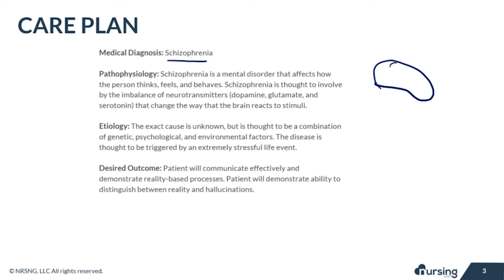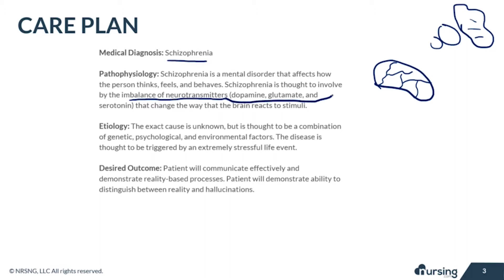Schizophrenia affects how the patient thinks, how they feel, and how they behave. It is thought to involve an imbalance of neurotransmitters like dopamine, glutamate, and serotonin in the brain, which changes the way the brain reacts to stimuli. The exact cause is unknown, but it's thought to be a combination of genetic, psychological, and environmental factors, and is often triggered by an extremely stressful life event.